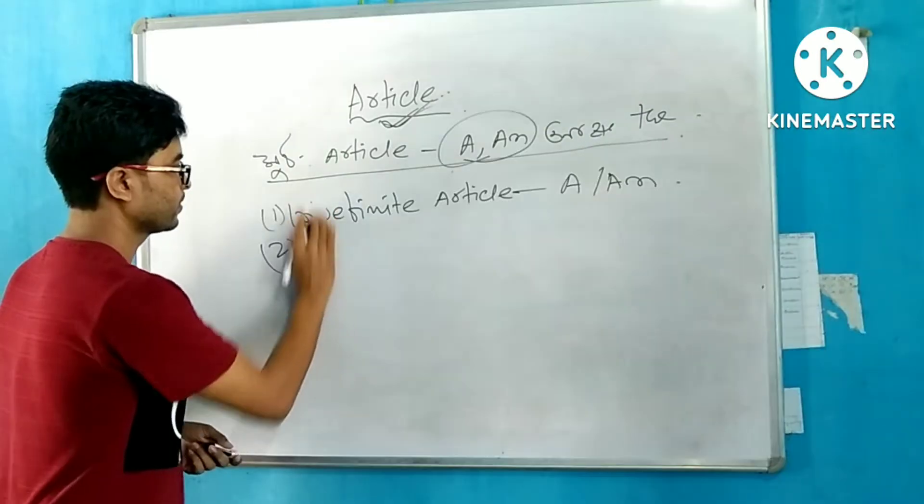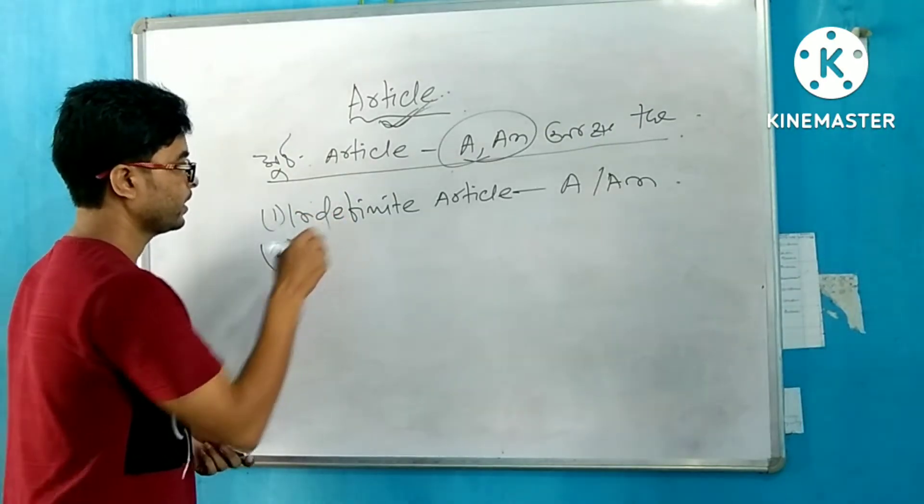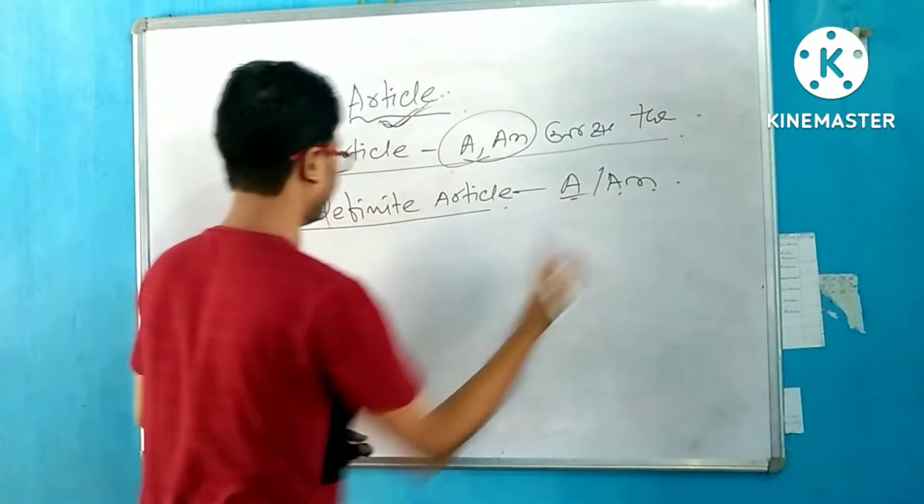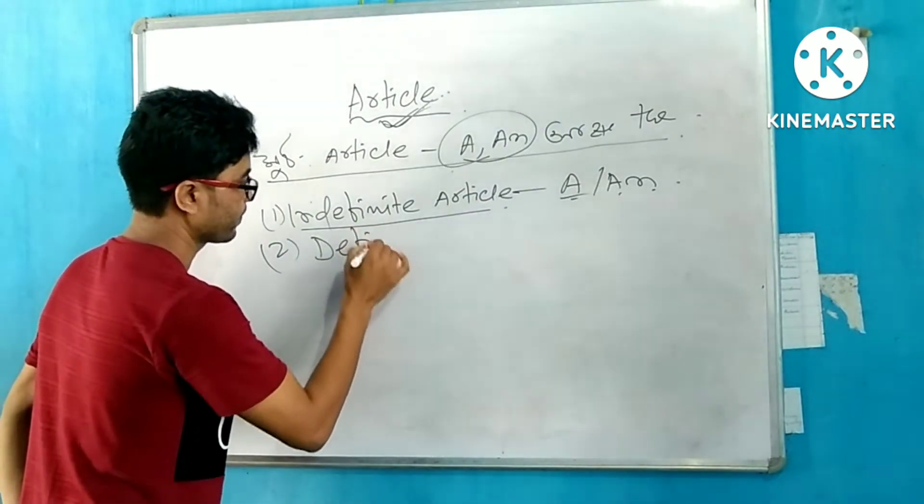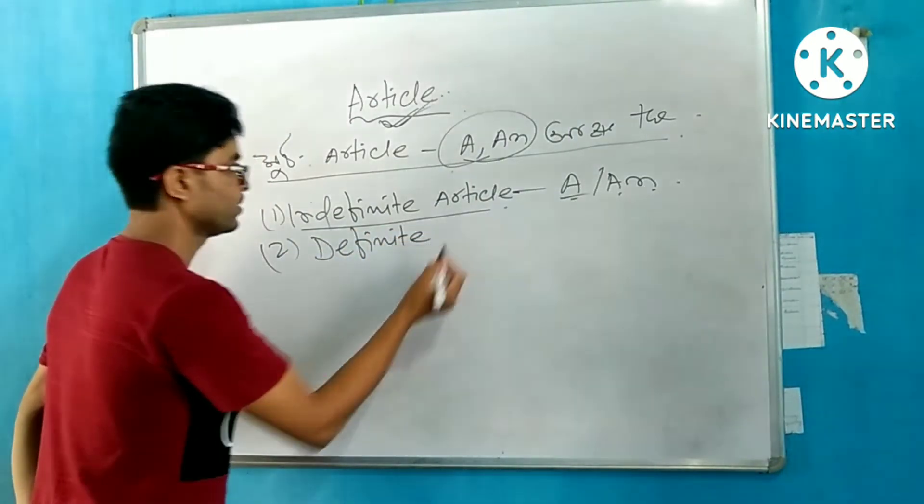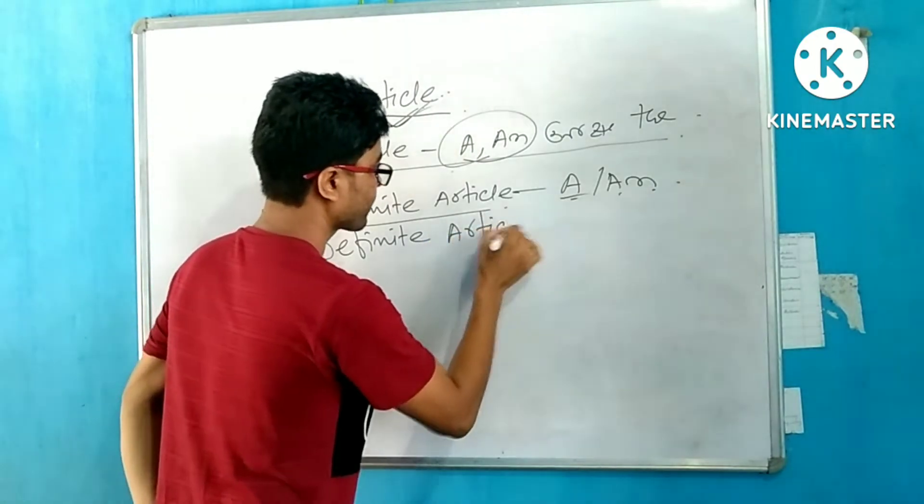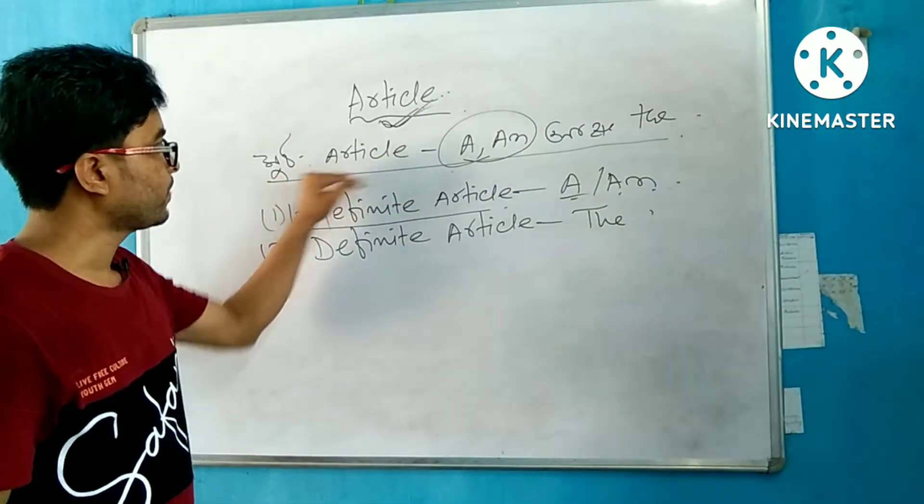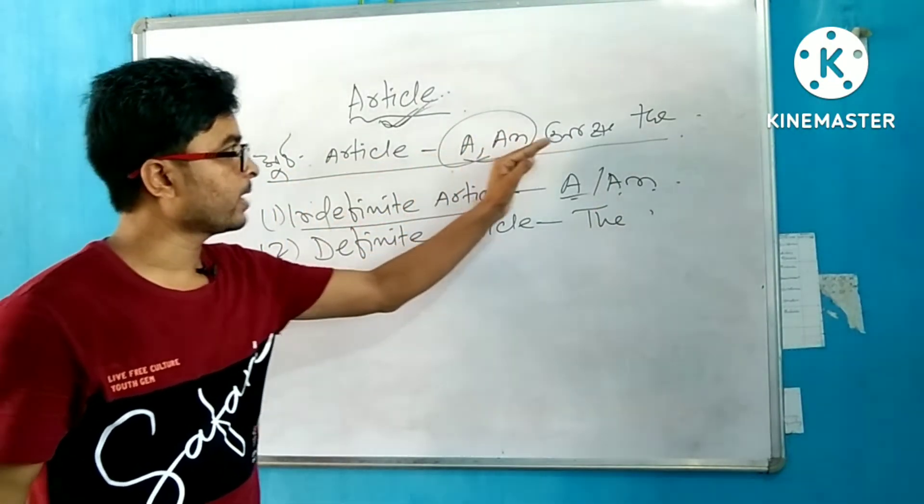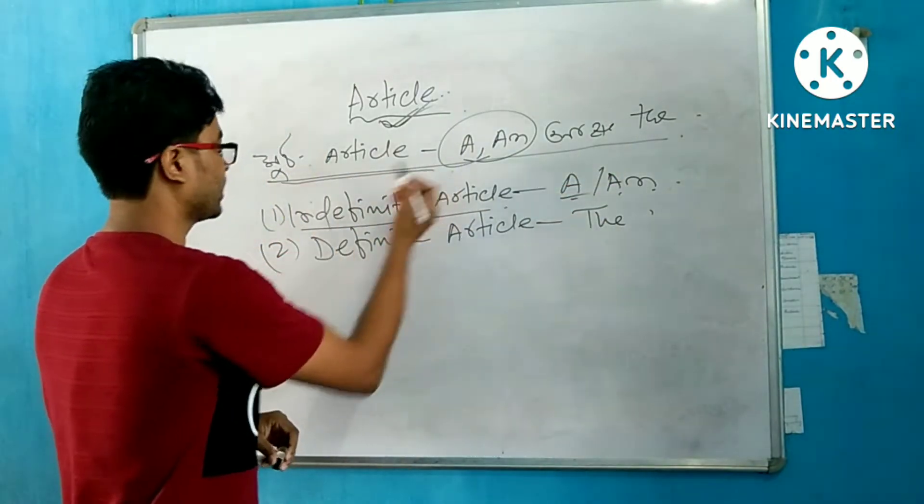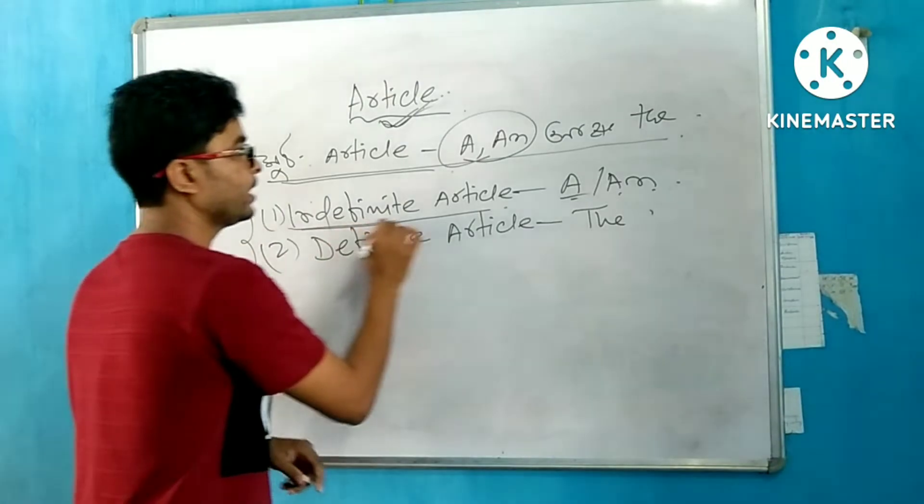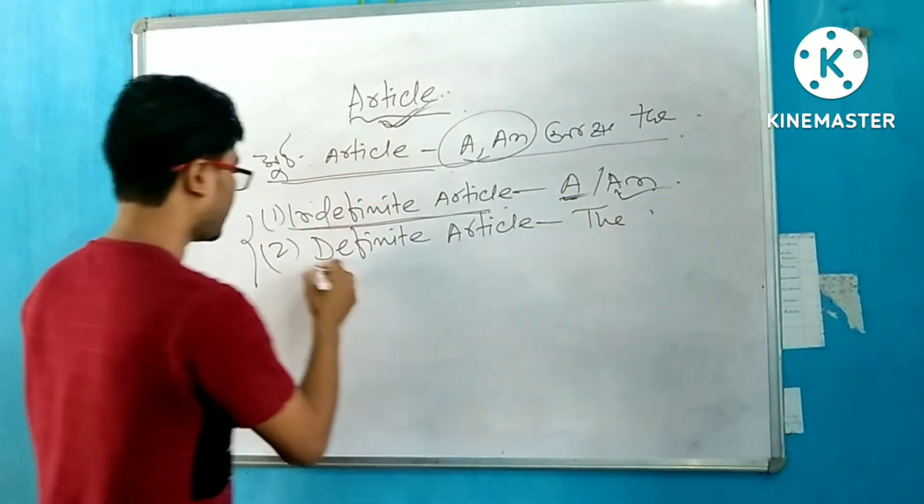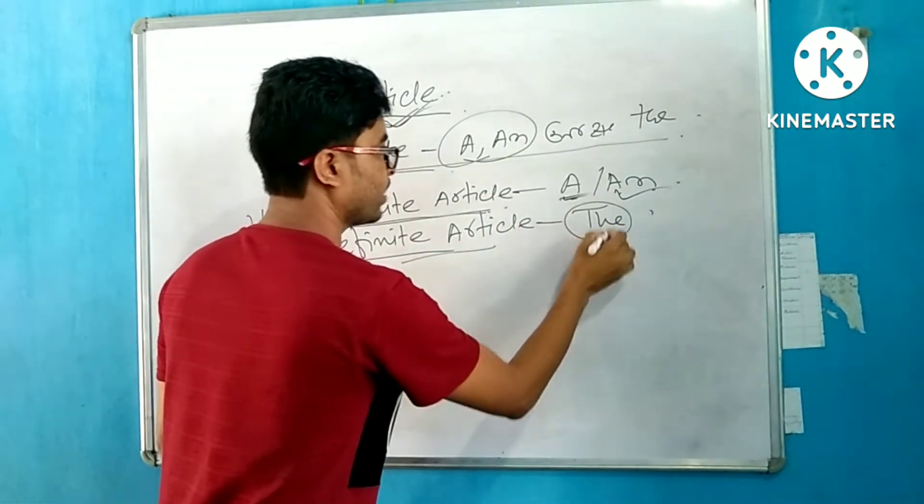We can divide these articles into two categories. The indefinite articles are A and An, and The is the definite article. Today I will discuss the indefinite articles A and An.